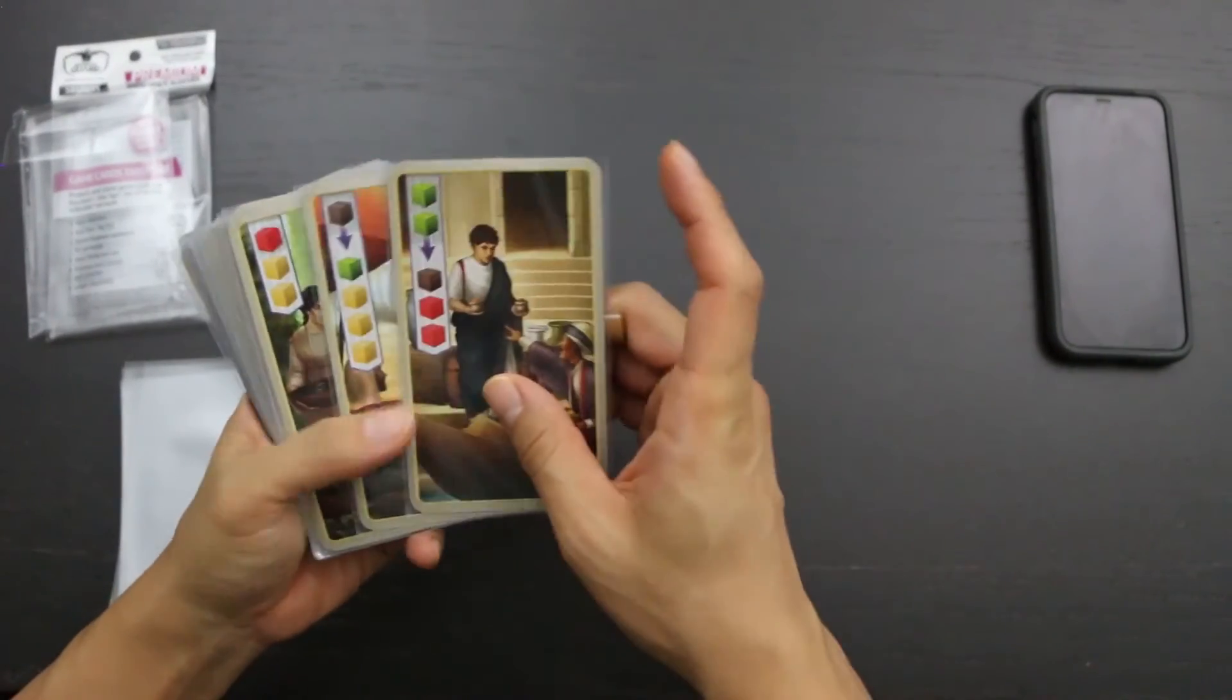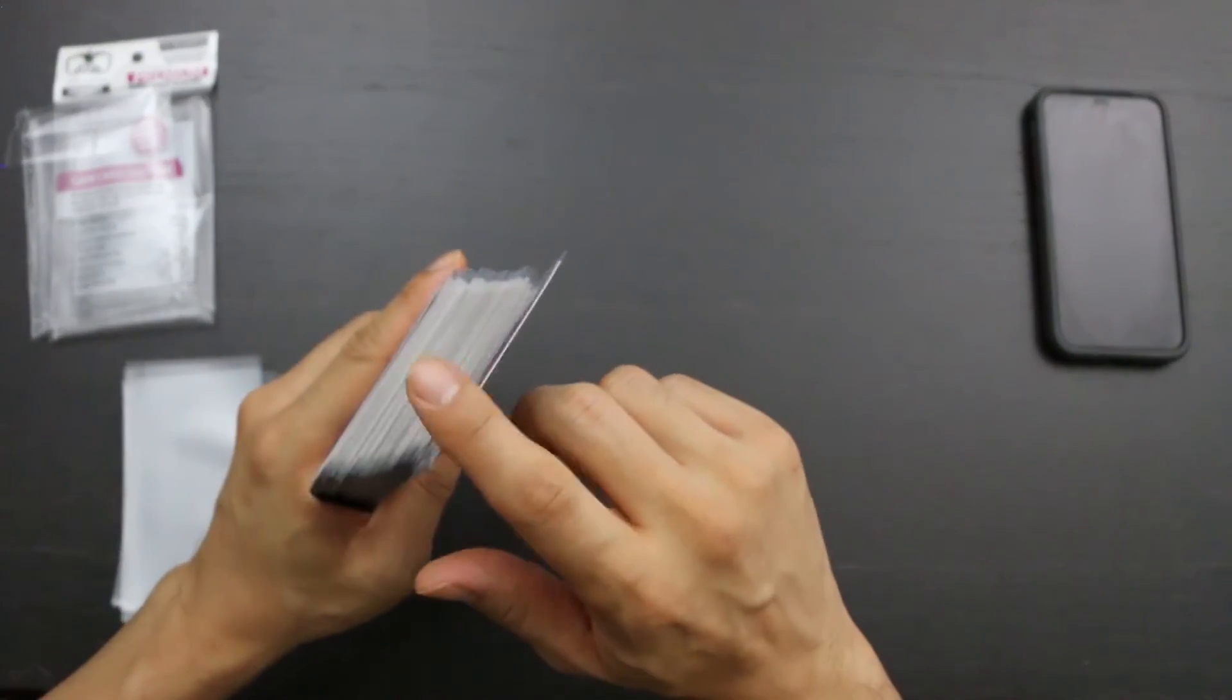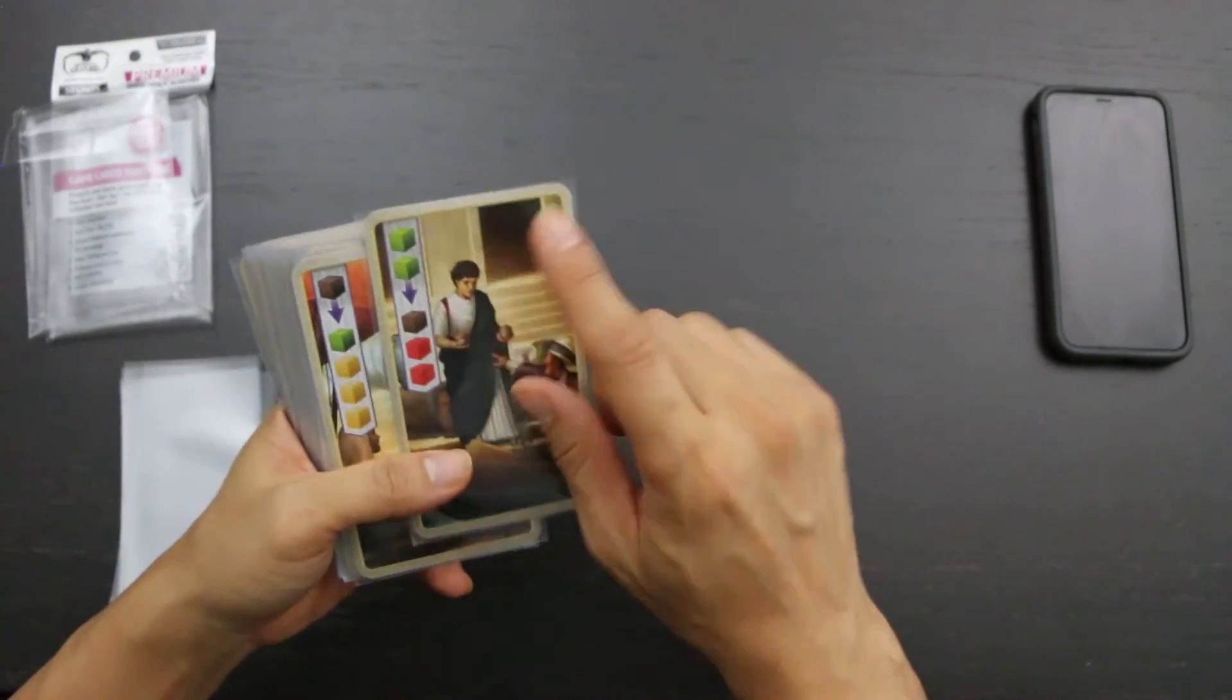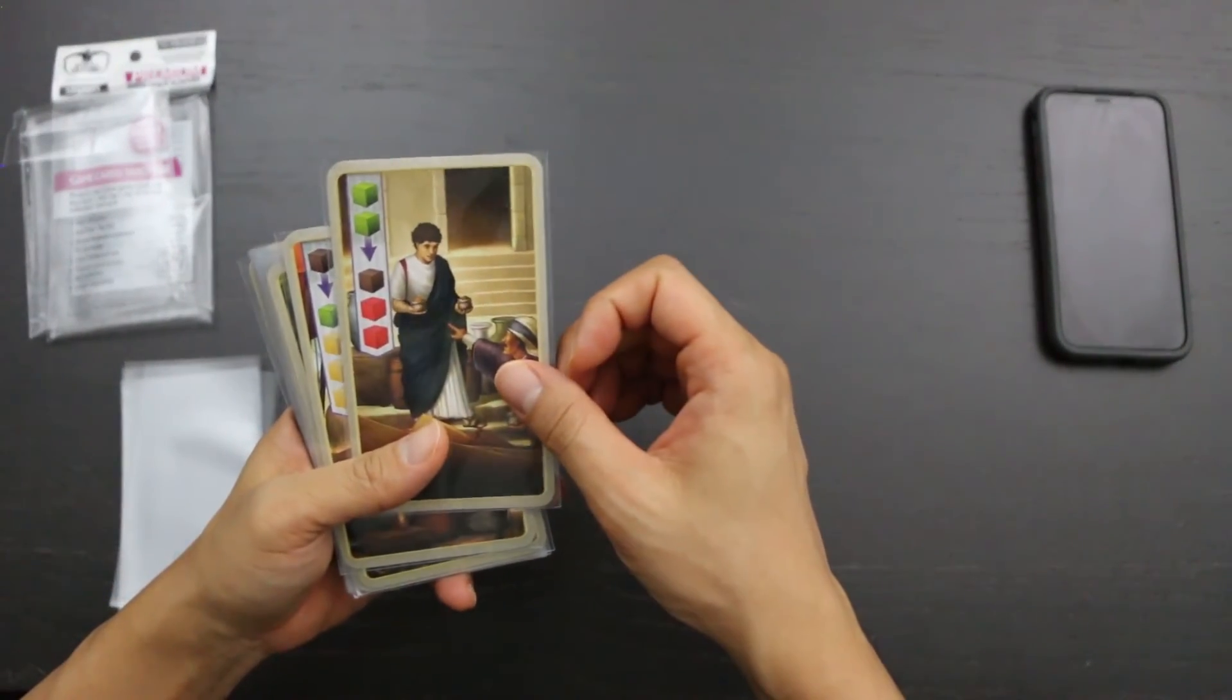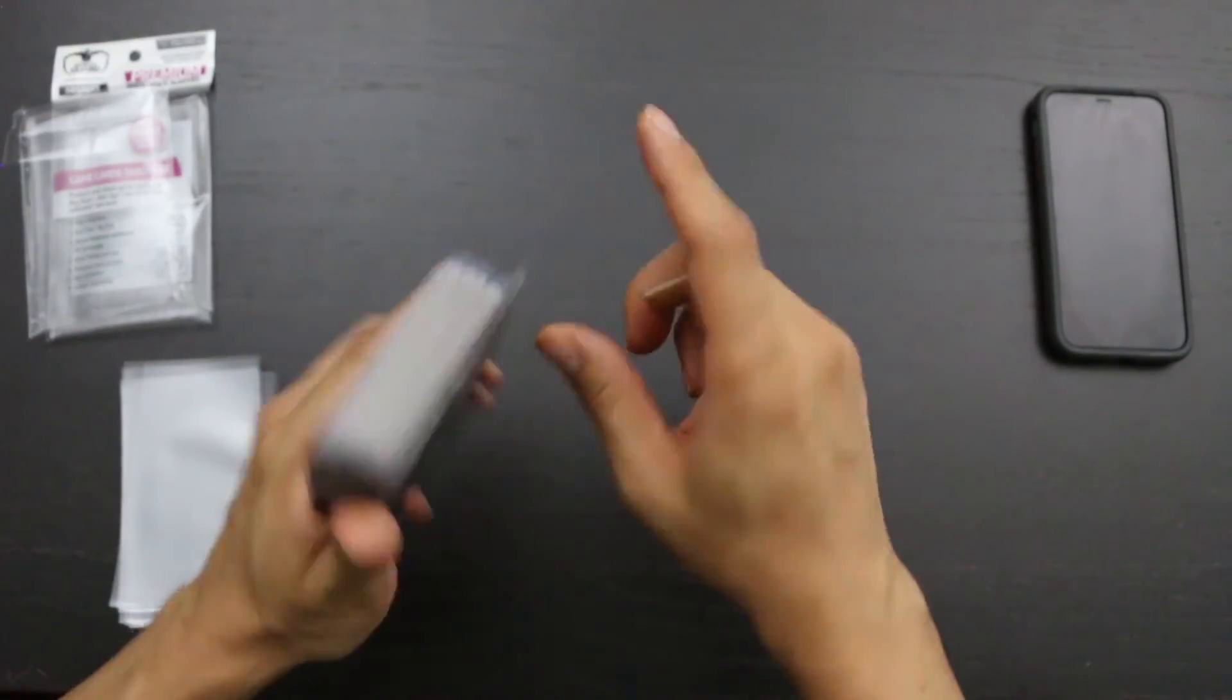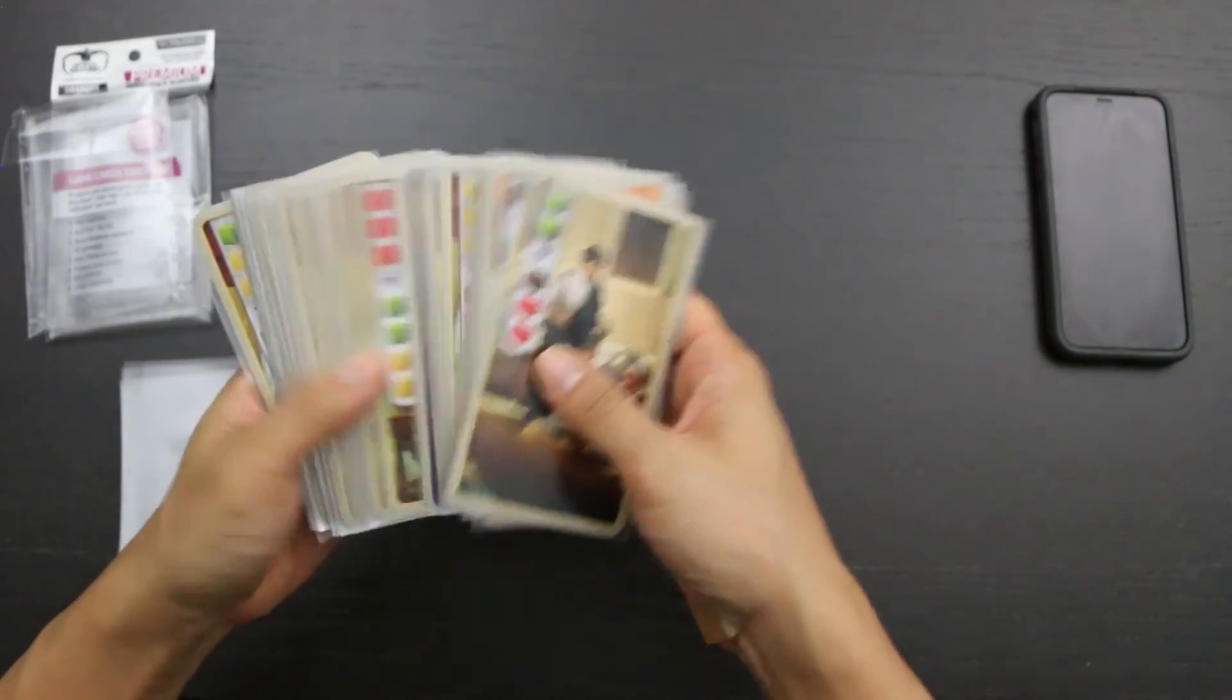Those of you who want to sleeve slightly taller games like Century Spice Road are also going to be concerned about the vulnerability of the top of the card with these sleeves because there's barely any room at the top. For your average tarot card sleeve, you're going to still have only a little bit of space between the opening of the sleeve and the top edge of the card. And so that's going to be a concern for some of you as well.